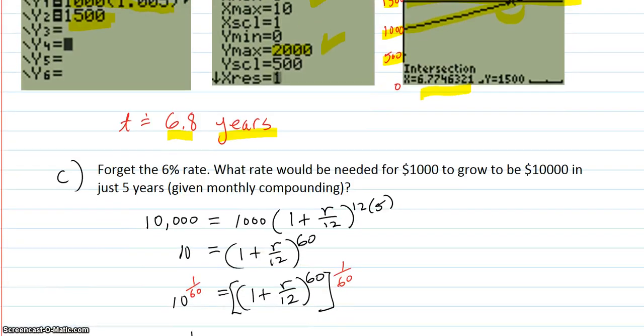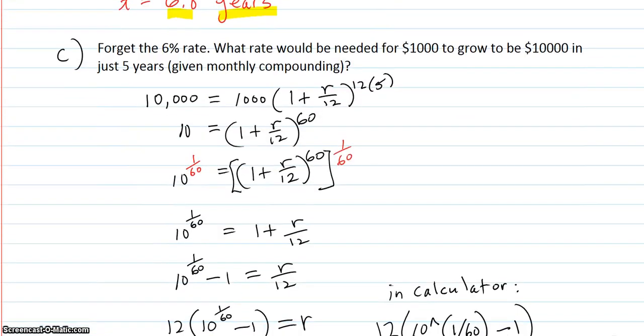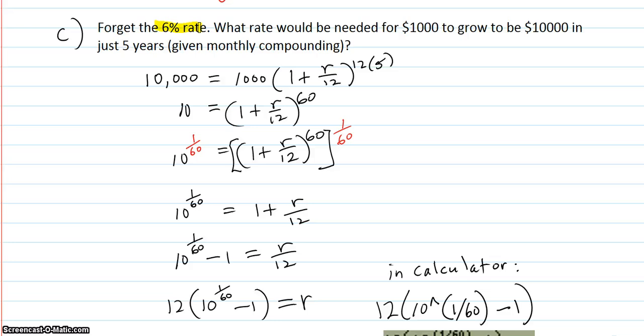Then we have our last question. This one says, forget the 6% rate. What rate would be needed for $1,000 to grow to be $10,000 in just five years, given monthly compounding? So it grows to $10,000. Initially $1,000. It's 1 plus r over 12. It's 12. And we want it to be five years. So we're solving for r.